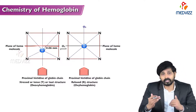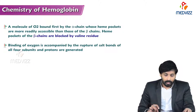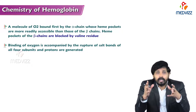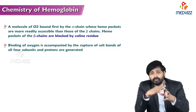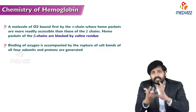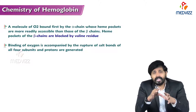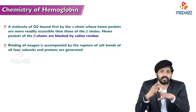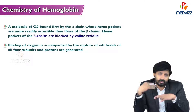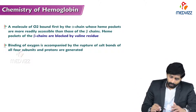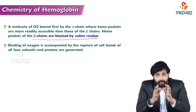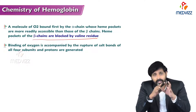Oxygen is first bound by the alpha chains, whose heme pockets are more readily accessible, because hemoglobin has a quaternary structure with two alpha chains on the outside and two beta chains inside. The heme pockets of the beta chains are blocked by valine residues, which prevent oxygen from binding first, so oxygen molecules bind to the alpha chains first.